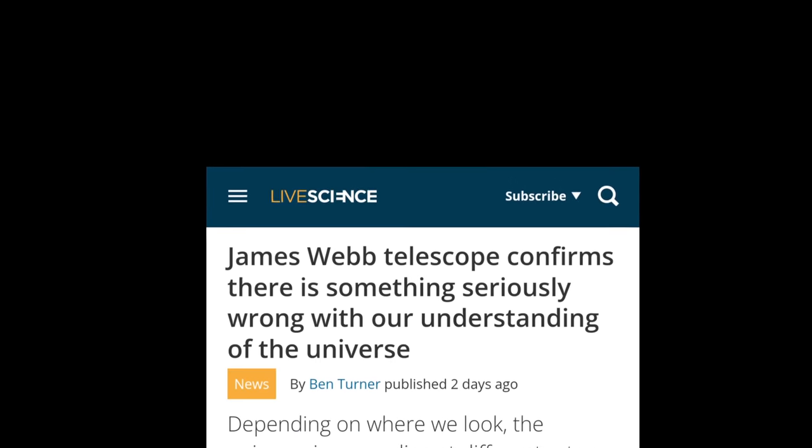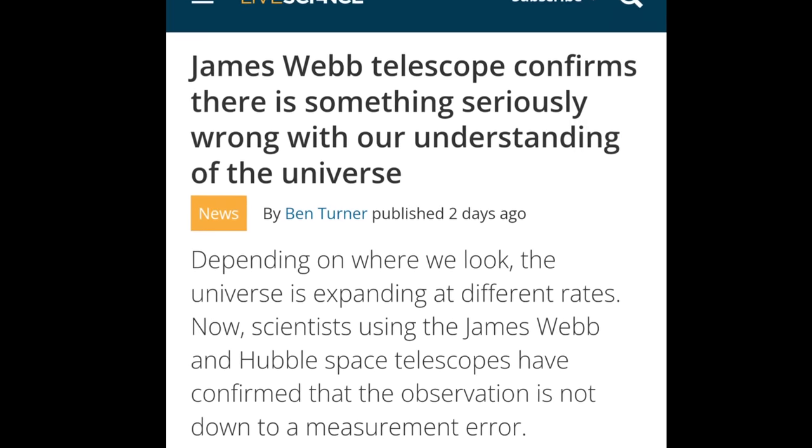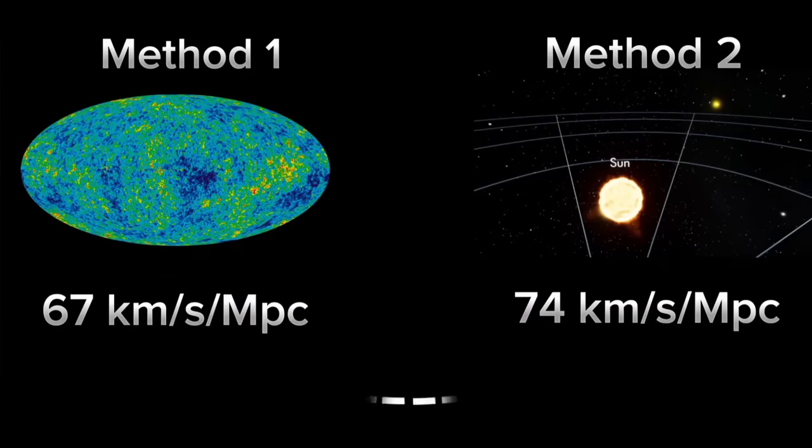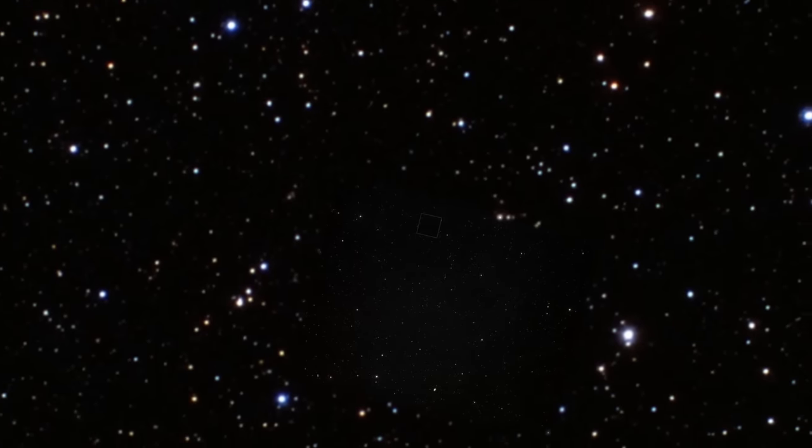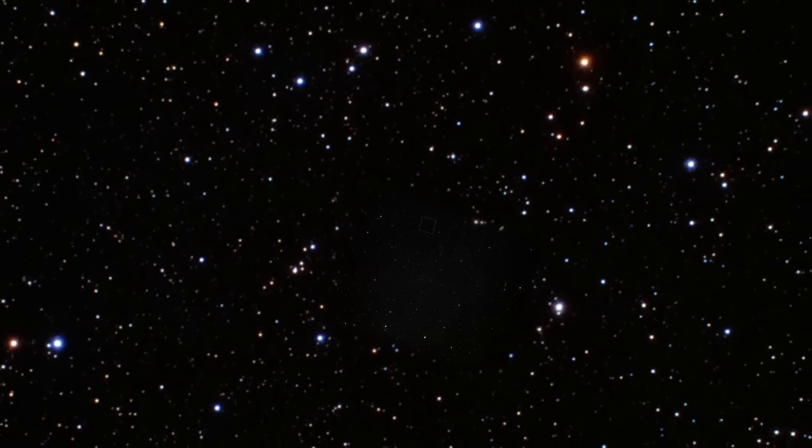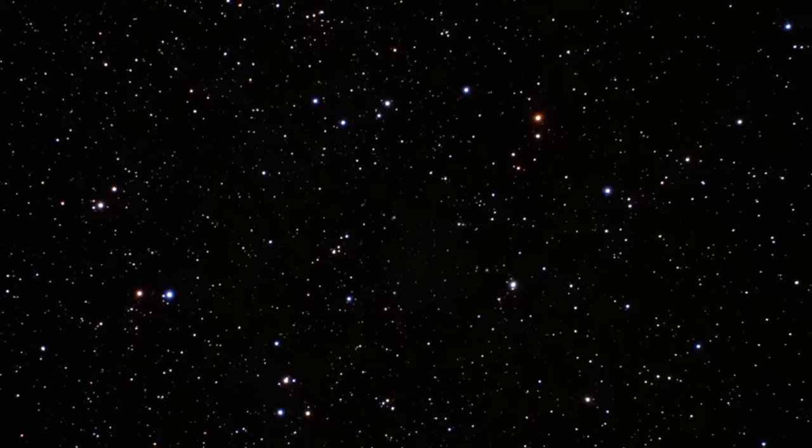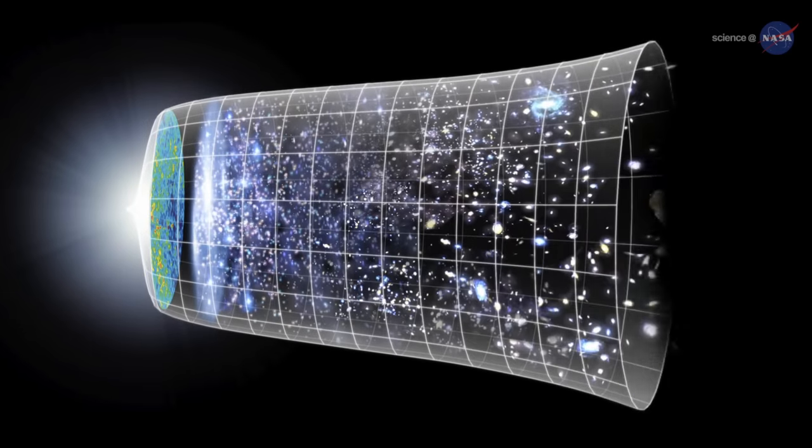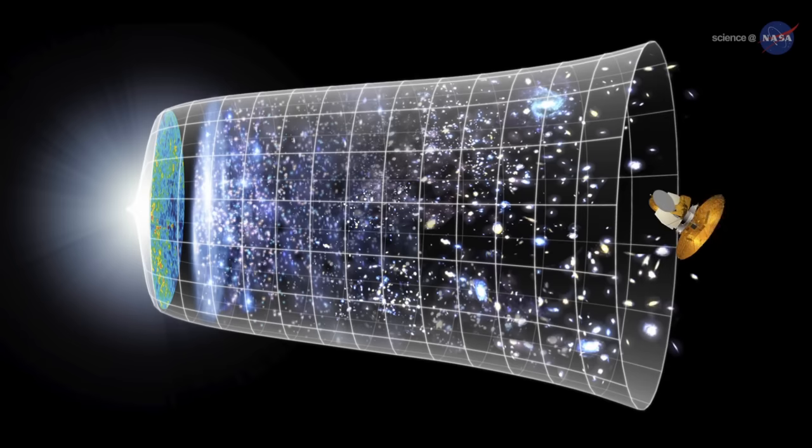Also, the new images of James Webb Telescope confirm that the previous measurements are correct, and the universe is expanding differently in different places. This disparity in the value of the expansion rate of the universe suggests that perhaps the universe is not the same everywhere. Well, if this is true, then our standard cosmological model would fall apart, since we cannot estimate the age and size of our universe with different values of expansion rate.